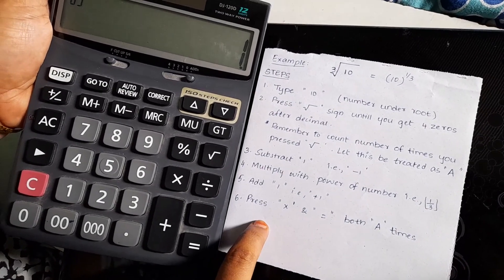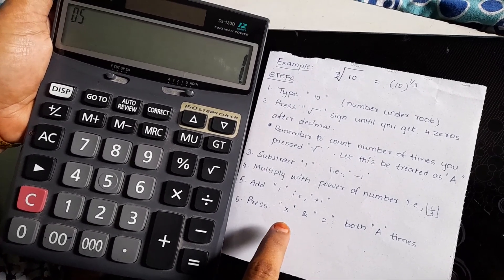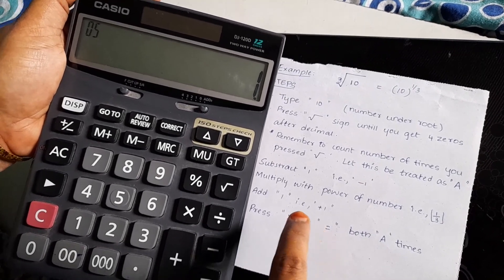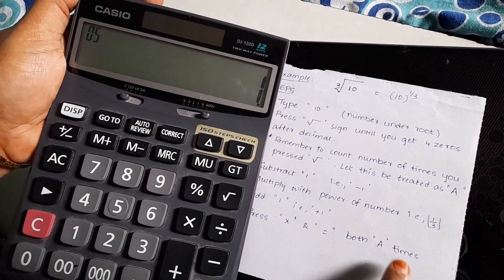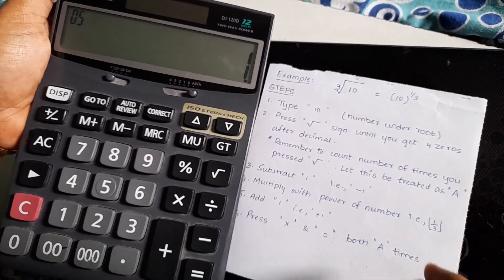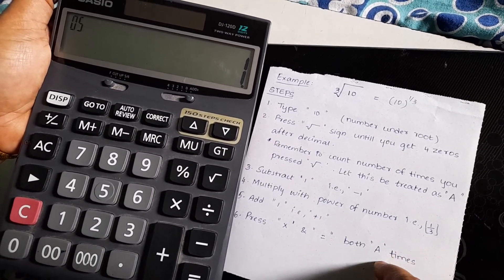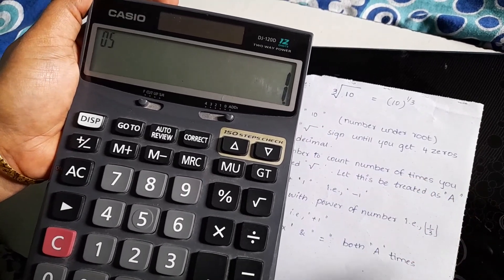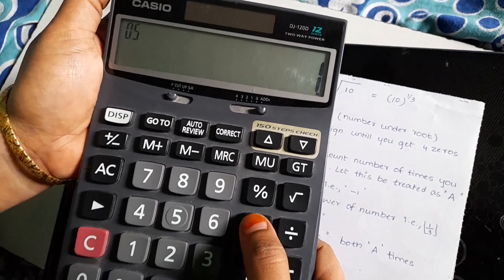And in the sixth step, I need to press multiplication sign and equal to sign. Both. How many times? A times. Previously, in this example, our A is number 15. So, I need to press into equal to sign 15 times. See. Let's press it.